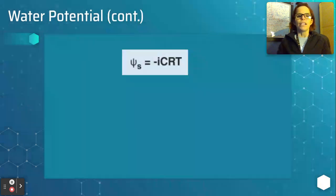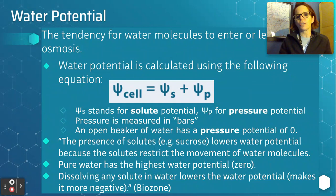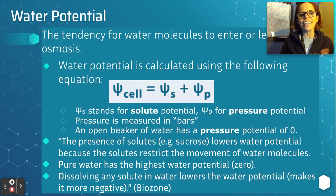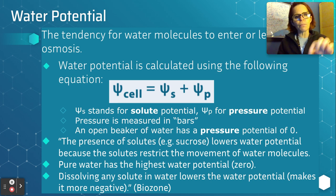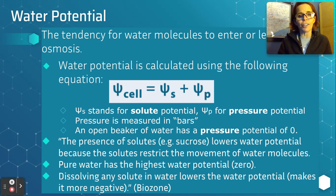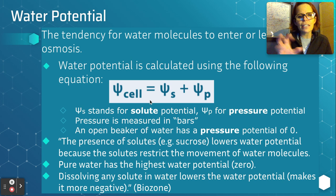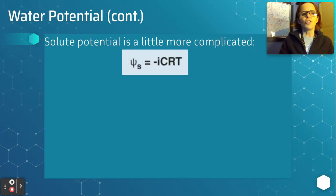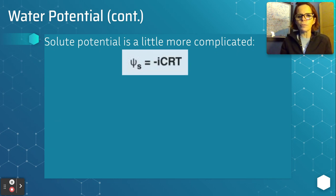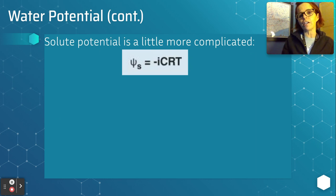Even though the water potential equation looks intimidating, it's as easy as five equals three plus two — you just add two numbers. However, one of the variables is a little more complicated. The solute potential, shown with psi-S, uses the equation: negative i × C × R × T. So what do these things stand for? Negative i, or just the i, is the ionization constant.